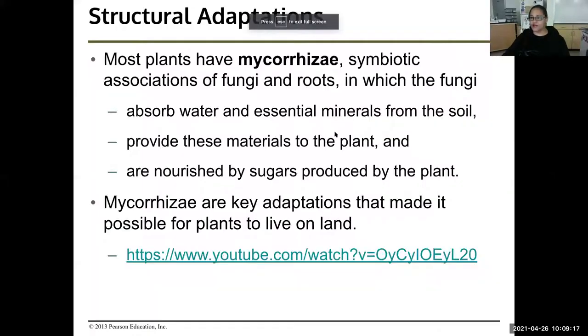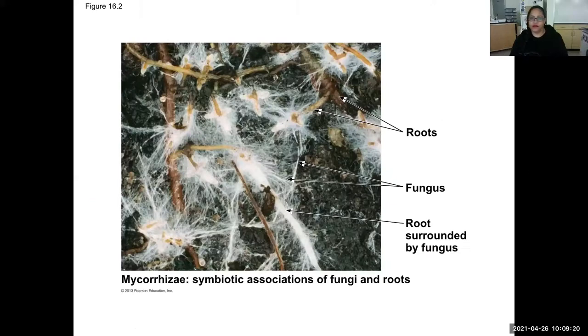So that was the first key adaptation to allow life to come to land. Plant roots that look like they have fungus all over them actually do — they're mycorrhiza, and it helps them absorb nutrients.